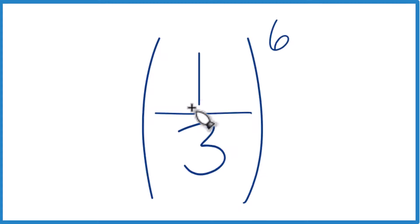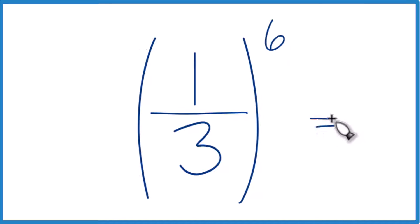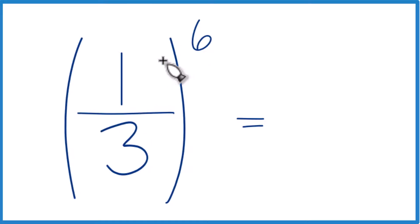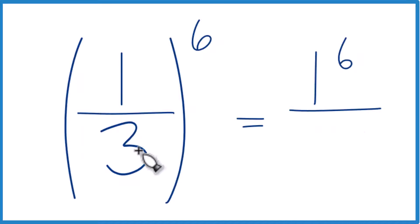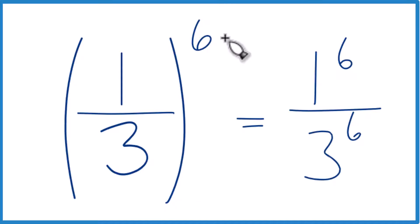Let's figure out what we get when we have one-third to the sixth power. The best way to do this is to think of it as one to the sixth over three to the sixth. That's the same thing as one-third to the sixth power.